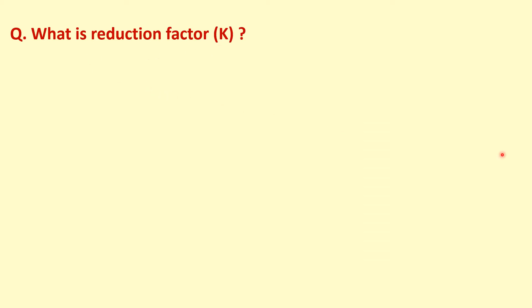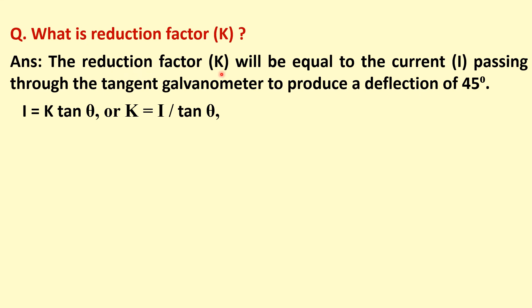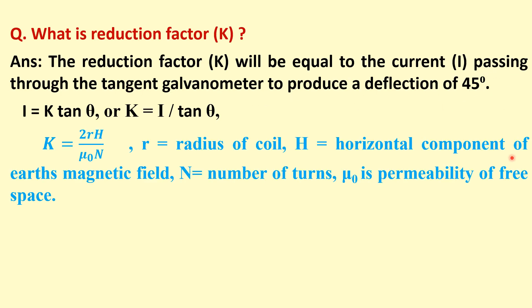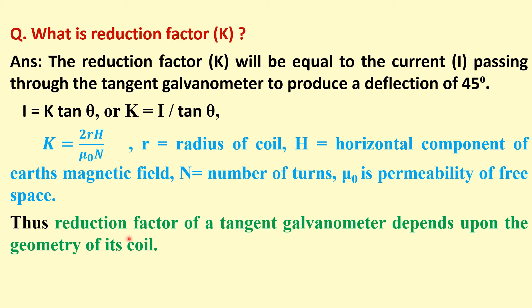Next question is what is the reduction factor k? The reduction factor k is related with I by the relation I equals k tan theta or k equals I by tan theta. If we put tan theta equal to 45 then k equals I. In definition we can say the reduction factor k will be equal to the current I passing through the tangent galvanometer to produce a deflection of 45 degrees. Also we can find out using this formula: k equals 2r times h divided by mu0 times n, where r is the radius of coil, h is horizontal component of earth's magnetic field, n number of turns in coil, mu0 is the permeability of free space that is 2 pi times 10 to the power minus 7. This reduction factor depends on the geometry of its coil because k depends on r and n. That is why it is a geometrical factor also.